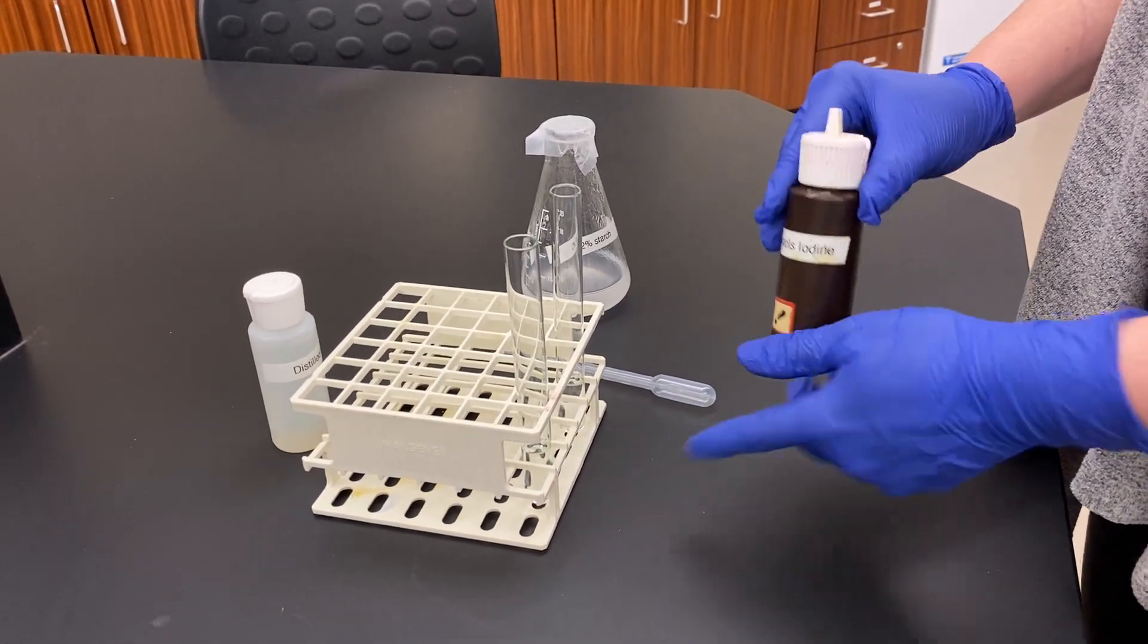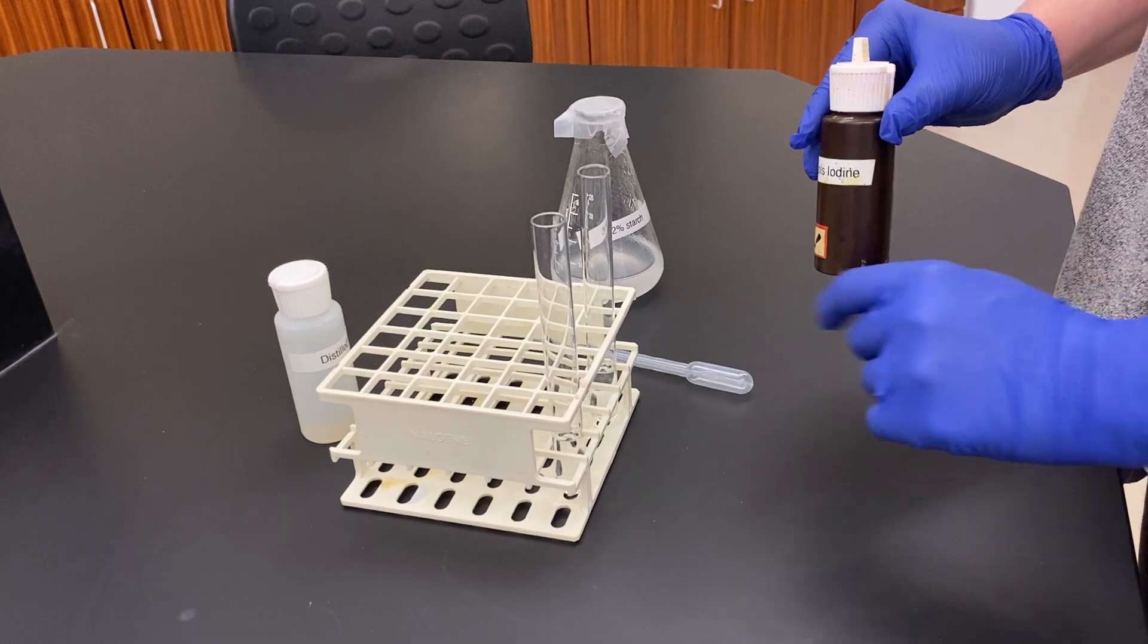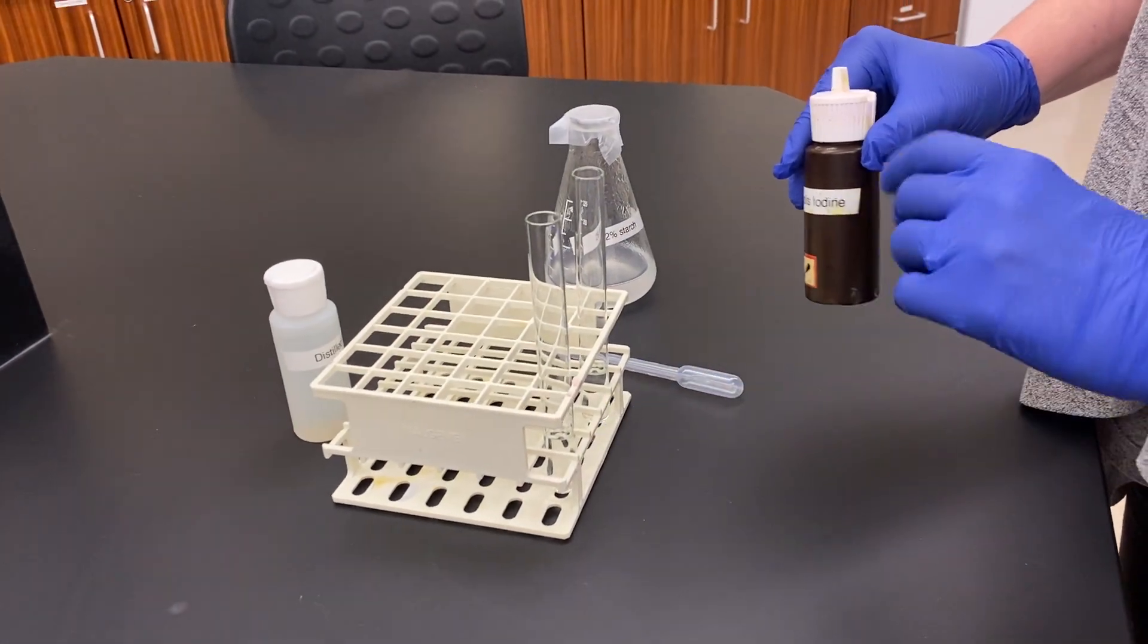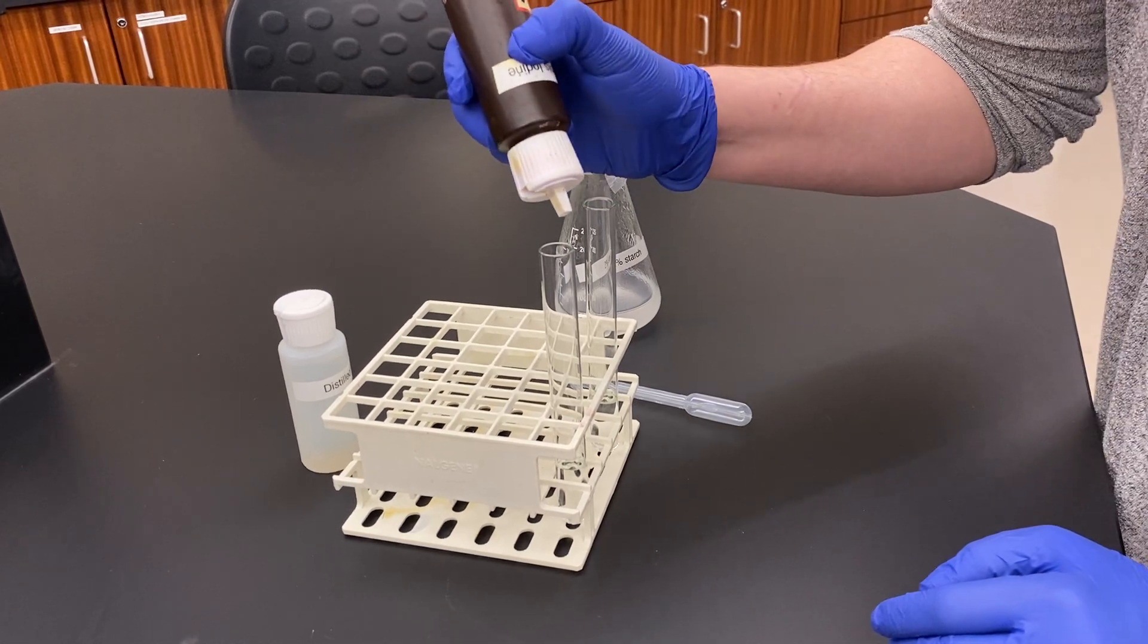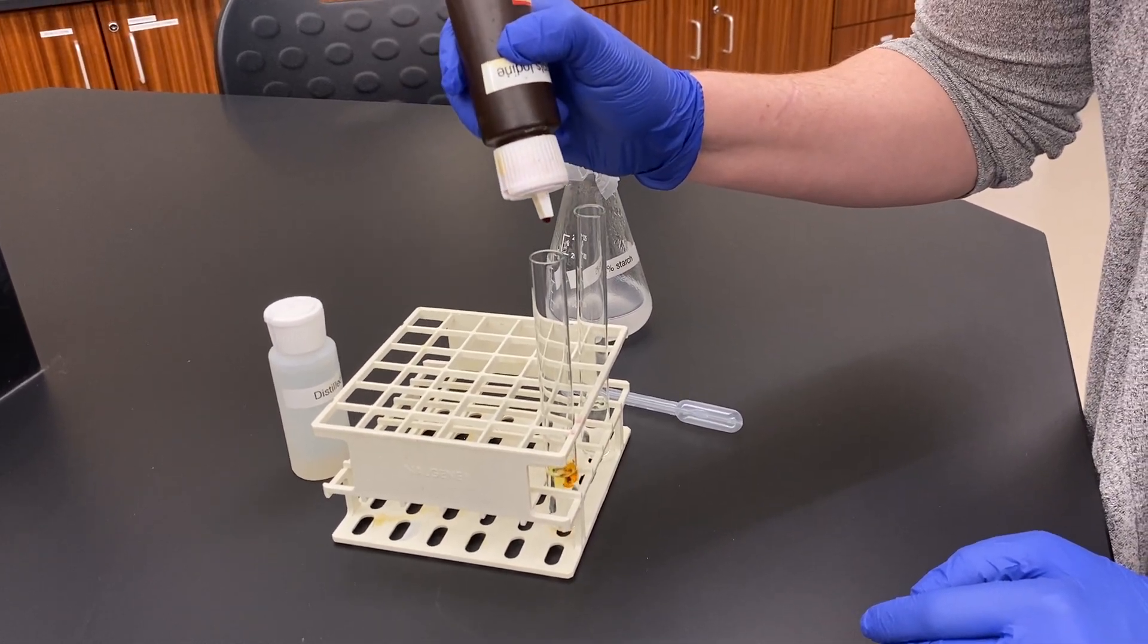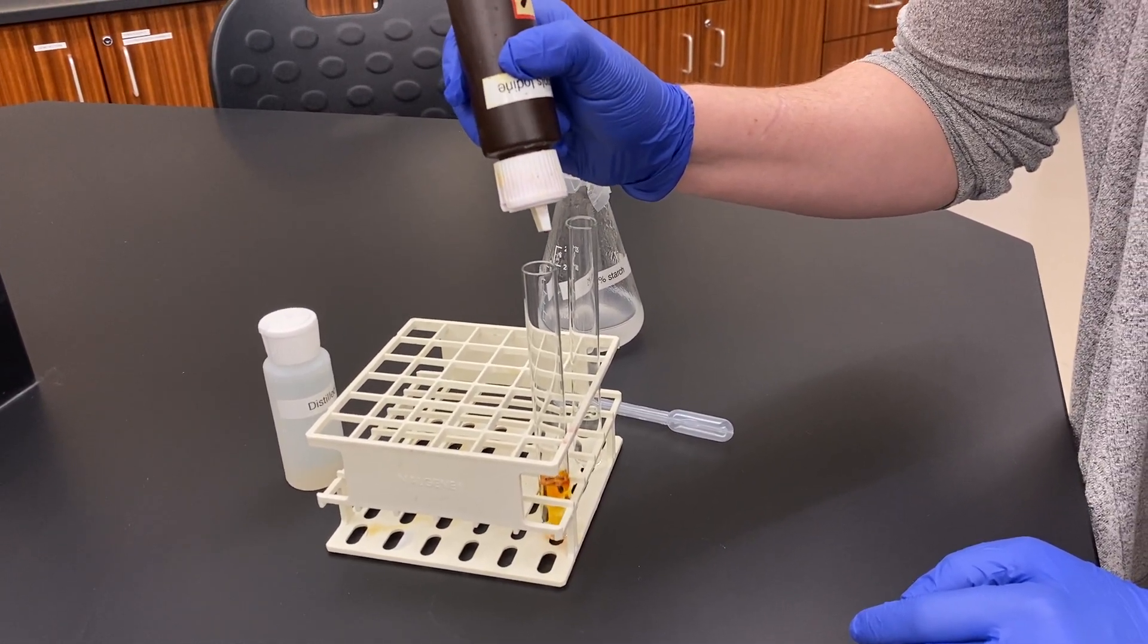I've got two test tubes here with five milliliters of water each, and I'm going to add four drops of iodine to each. This will allow you to visualize the color of what iodine looks like itself.